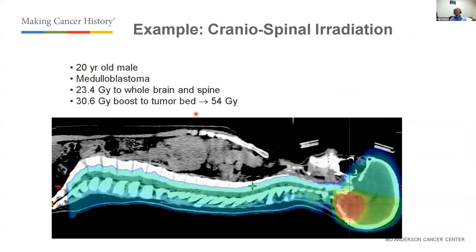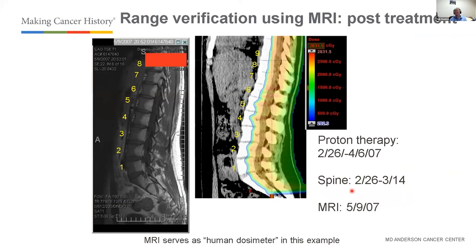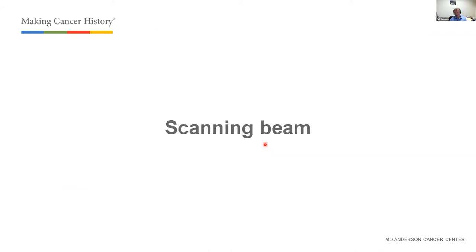An example for cranial spinal irradiation shows treatment from the posterior — no anterior beams — with a boost section, achieving a very conformal dose distribution using passive scattering. Range verification can be performed using MRI, where discoloration on post-treatment MRI images correlates with the proton range.